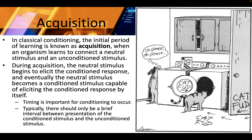In classical conditioning, the initial period of learning is known as acquisition, when an organism learns to connect a neutral stimulus and an unconditioned stimulus. During acquisition, the neutral stimulus begins to elicit the conditioned response, and eventually the neutral stimulus becomes a conditioned stimulus, capable of eliciting the conditioned response by itself. Timing is important for conditioning to occur — typically, there should only be a brief interval between presentation of the conditioned stimulus and the unconditioned stimulus.